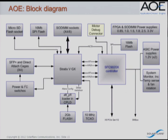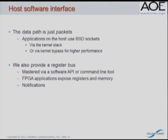The host interface is a network adapter — the host sees a network adapter, and the FPGA is really just a bump in the wire. The interface between applications and the FPGA is just packets. Applications talk to the FPGA through the sockets interface, using kernel bypass for high performance. We also provide a register bus that can be mastered via software, letting our applications expose their own registers for configuration, plus a notification mechanism for alerting software of out-of-band events.